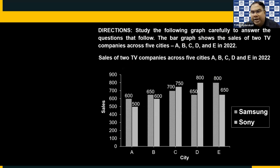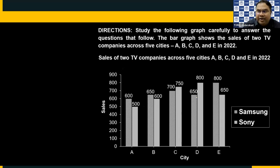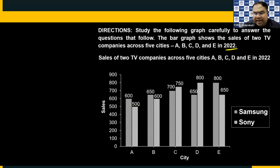Questions six to ten: Study the following bar graph carefully to answer the questions. The bar graph shows sales of two TV companies across five cities A, B, C, D, E in 2022. The first bar is Samsung and the second (vertical line) bar is Sony.